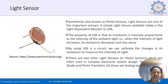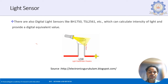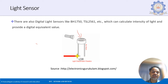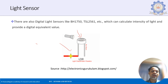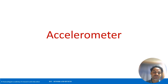The LDR we already examined: when no light falls on it, resistance is high and there is no conduction; when photons hit the LDR, conductivity increases. Common market models include the VH1750 or TSL2561.